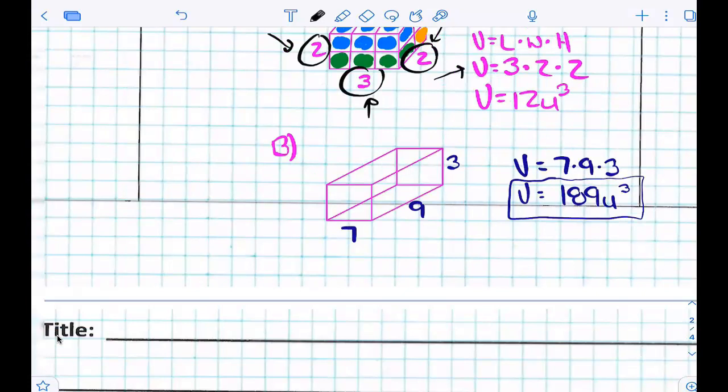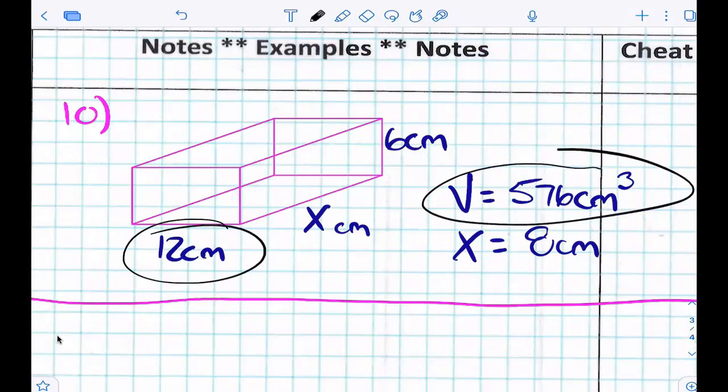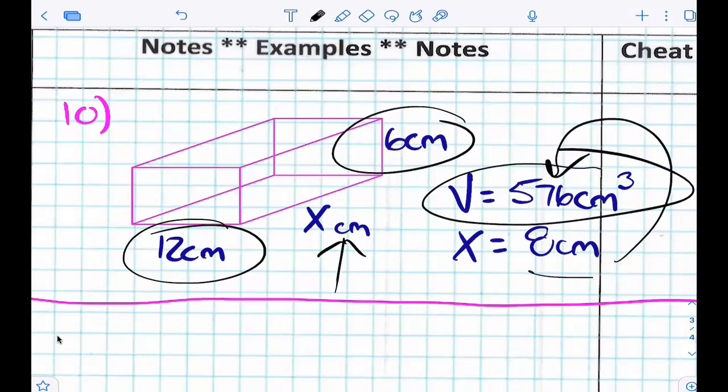How about this one? I gave you, on this problem, I gave you the volume, and I gave you the length, and I gave you the height, but I did not give you the width. What is the strategy we use to solve? Guess and check. We just guessed and checked. We pulled out our calculator, and we started typing in 12 times 6, and we started picking just random numbers. Not random numbers, some numbers based on an educated guess. And eventually, we found that 12 times 6 times 8 gave us our volume, so we knew our missing dimension was that 8 centimeters, right? Yeah. Cool beans? Yeah. Cool.